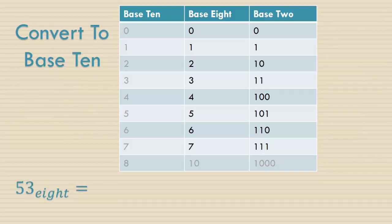Before we do that, let's take a look at converting 53 base 8 to base 10. So we have to remember what base 8 means. The place values are all powers of 8. The first place value is 8 to the 0, the second place value is 8 to the 1st, and so on.